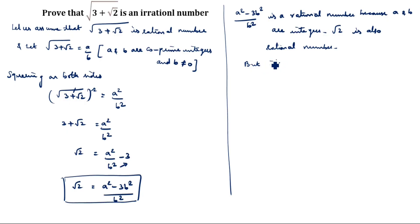But it contradicts as root 2 is an irrational number. So, here we conclude that root of 3 plus root 2 is an irrational number.